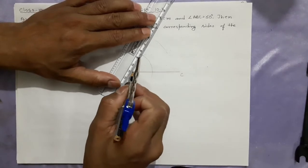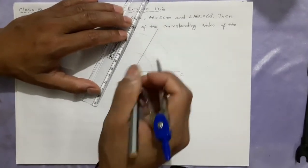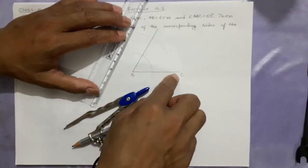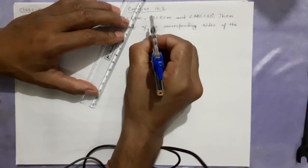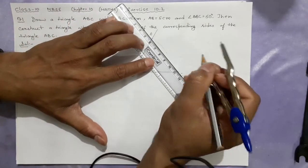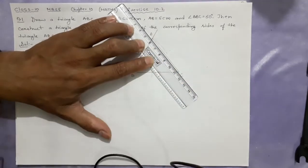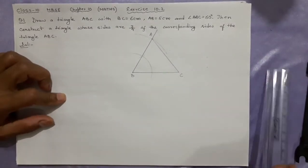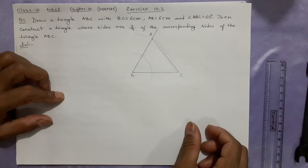After making the 60-degree angle, A is located at the intersection. Sometimes you may make the angle first and then cut the 5-centimeter arc — that is also fine. So this is point A, and when you join AC, your triangle ABC is ready.